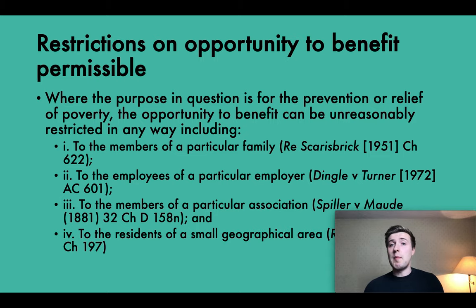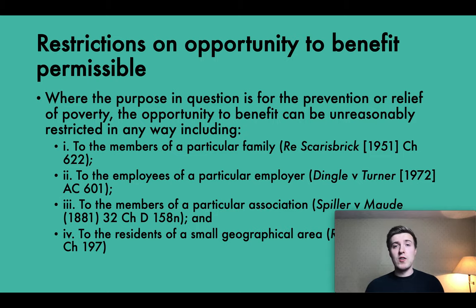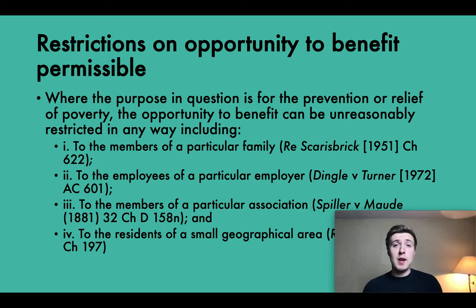A restriction to family members under the usual rule would be held unreasonable. Secondly, to the employees of a particular employer. The opportunity to benefit can also be extended to the employees of a particular employer. The question for the House of Lords in Dingell and Turner (1972) was whether a trust for the benefit and relief of poverty of particular employees should be treated in the same way as a trust for poor family members, and the court held that it could. Under the usual rule, a trust for the benefit of employees of a particular employer would be considered unreasonable and would prevent the purpose from benefiting a sufficient section of the public. But as regards poverty purposes, the usual rule is amended and the restriction is permitted.